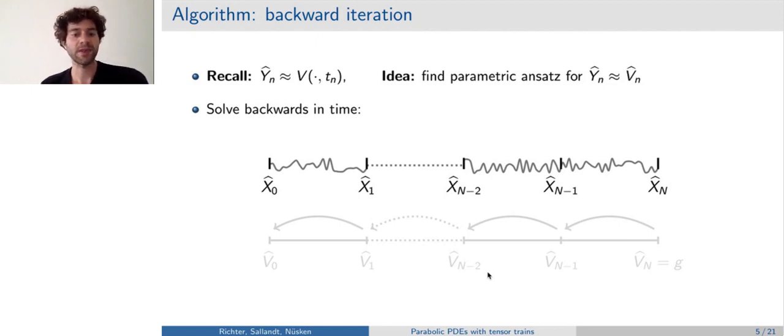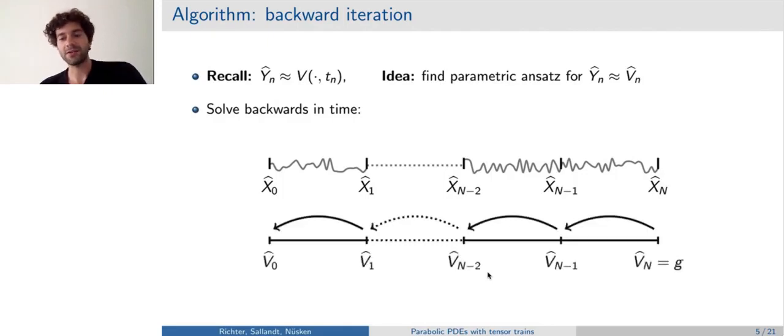Then, we start our backwards machinery. As I mentioned before, we know that at capital N, our true solution is equal to g, so we initialize it with that. And then, we do one time step backwards to get v_n minus one. Then, we do another time step backwards to get v_n minus two, and so on. So, we iterate this process to eventually end up at v_zero.